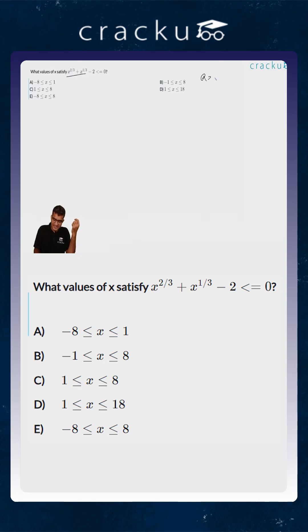To solve this, let us assume that a is equal to x to the power 1/3. Then what does the inequality look like? It becomes a² plus a minus 2 is less than or equal to 0.